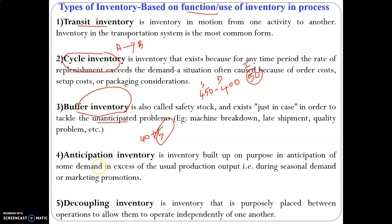The opposite of buffer inventory is anticipation inventory. If you manufacture a seasonal product, for example an umbrella, umbrellas sell most during the rainy season, followed by summer, while sales drop in autumn or spring. You will anticipate that demand will be very high during the rainy season, so you manufacture in excess during that period. That type of inventory is known as anticipation inventory.